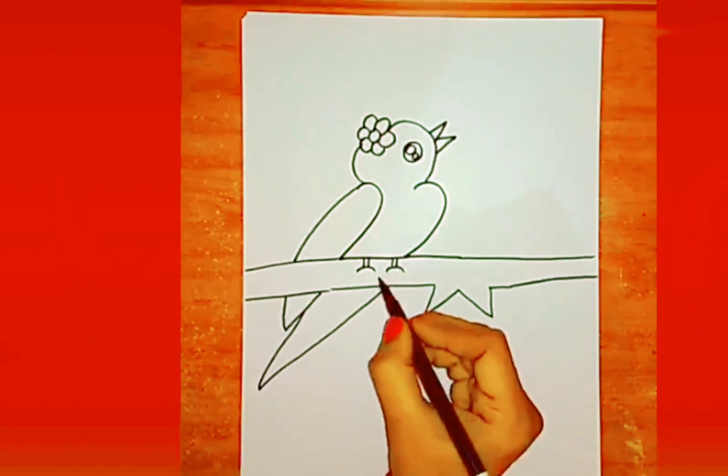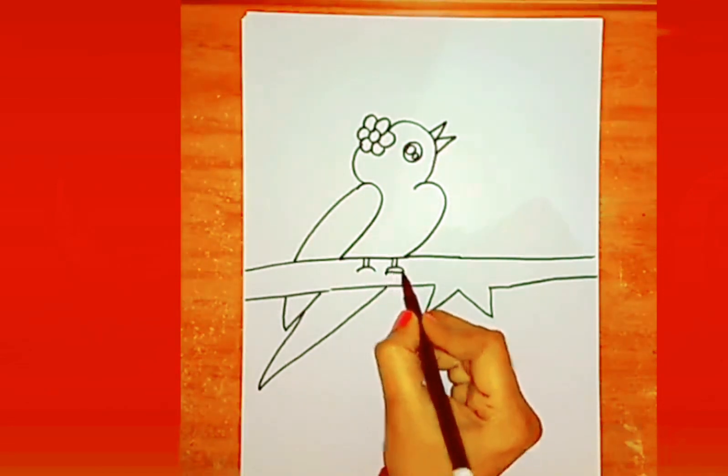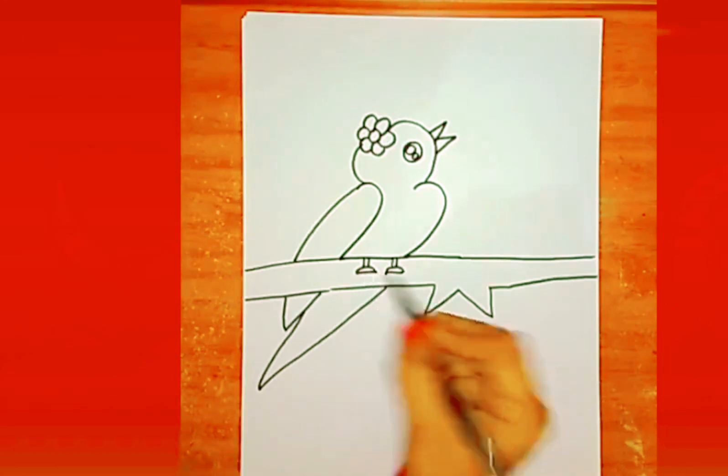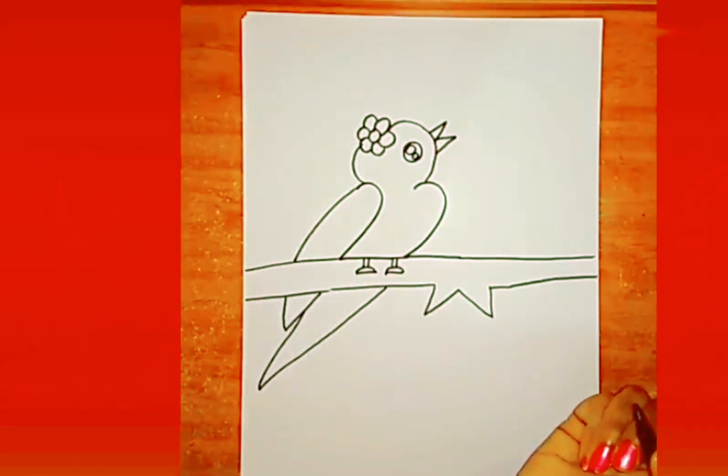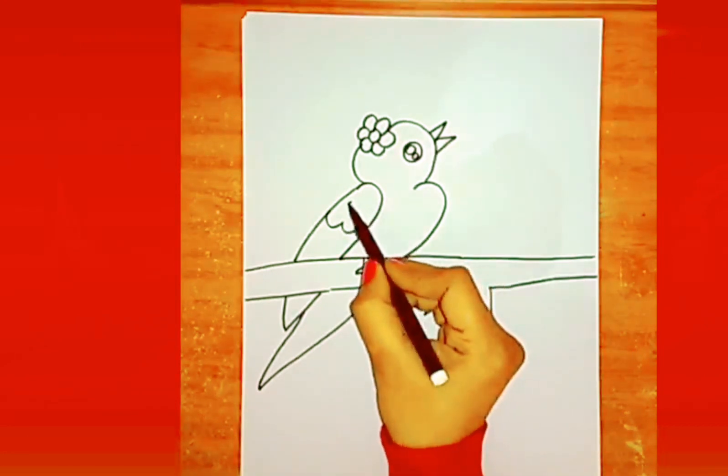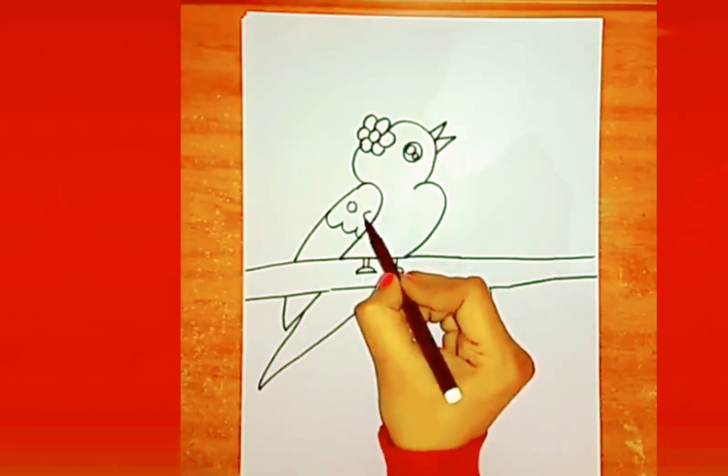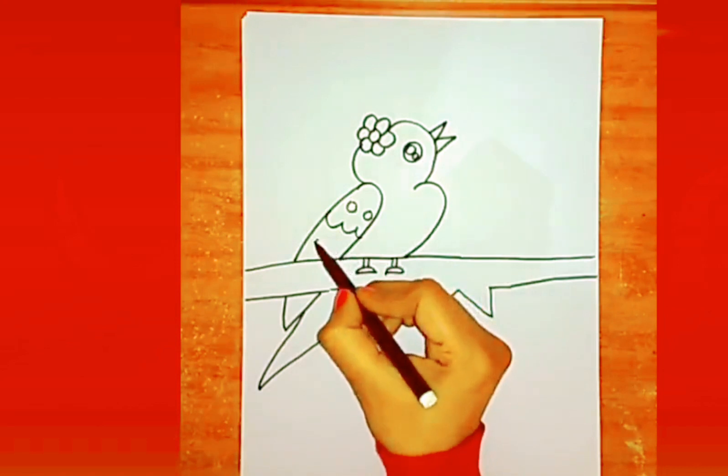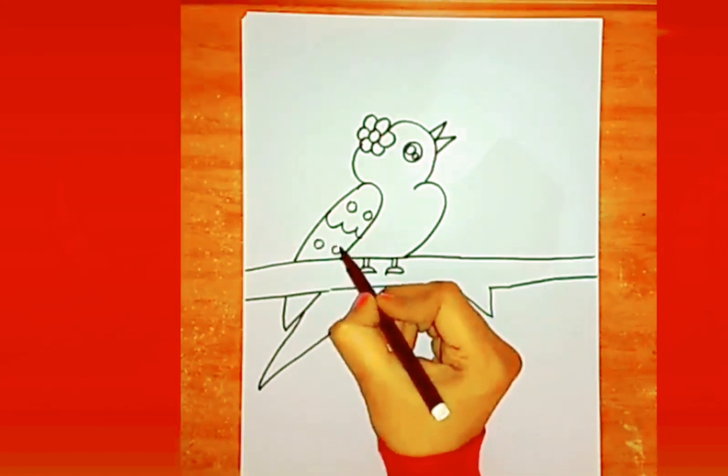Now extend the wing. Now draw the legs of the bird using straight lines and curved lines. Draw some patterns on the feather.